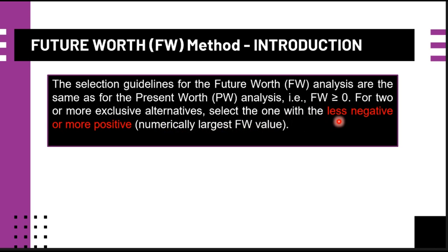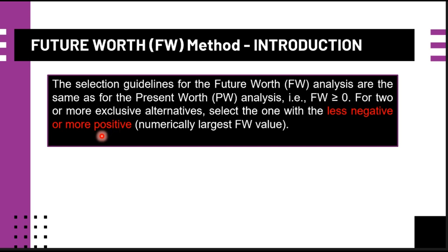As a review of what 'less negative' means: if you have −100, −200, and −300, you choose −100 because it is the less negative among the three. For 'more positive,' if you have 100, 200, and 300, you choose 300 because it is more positive than 200 and 100.